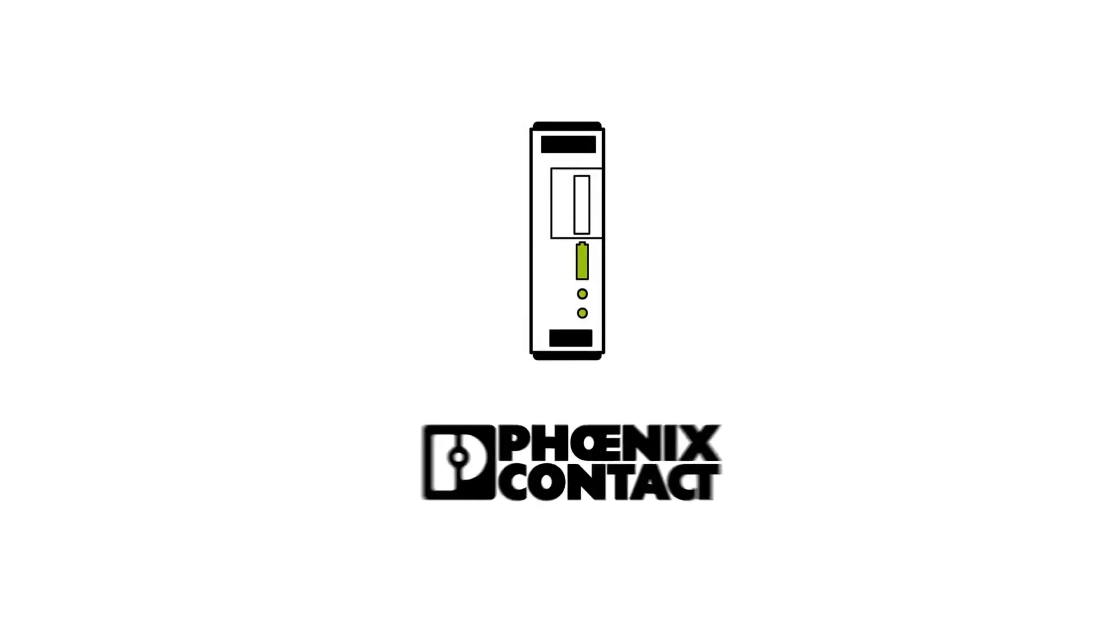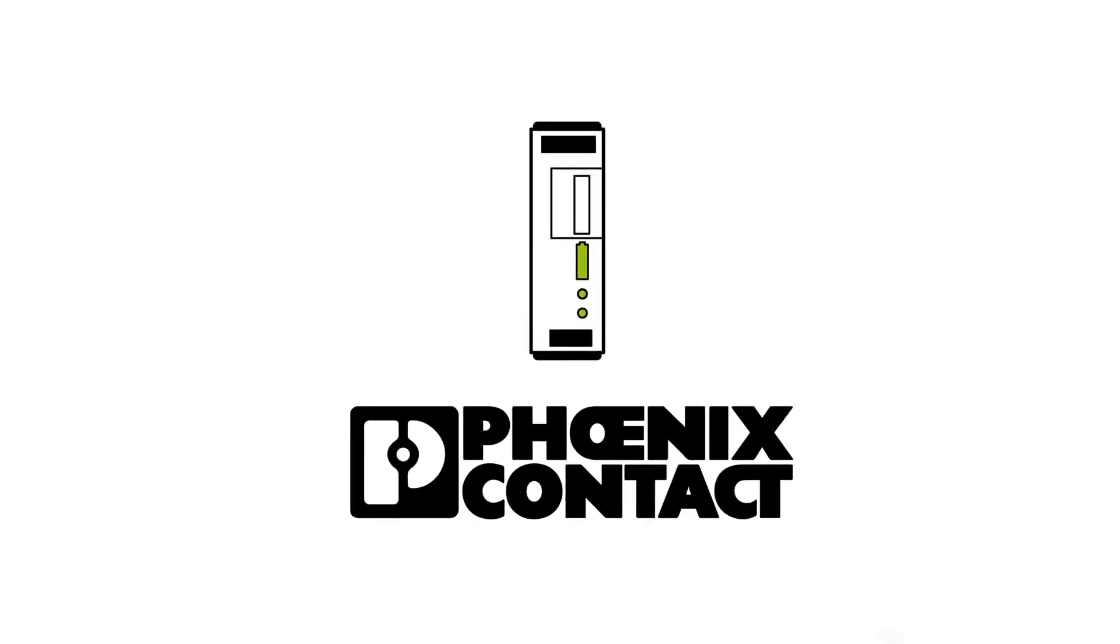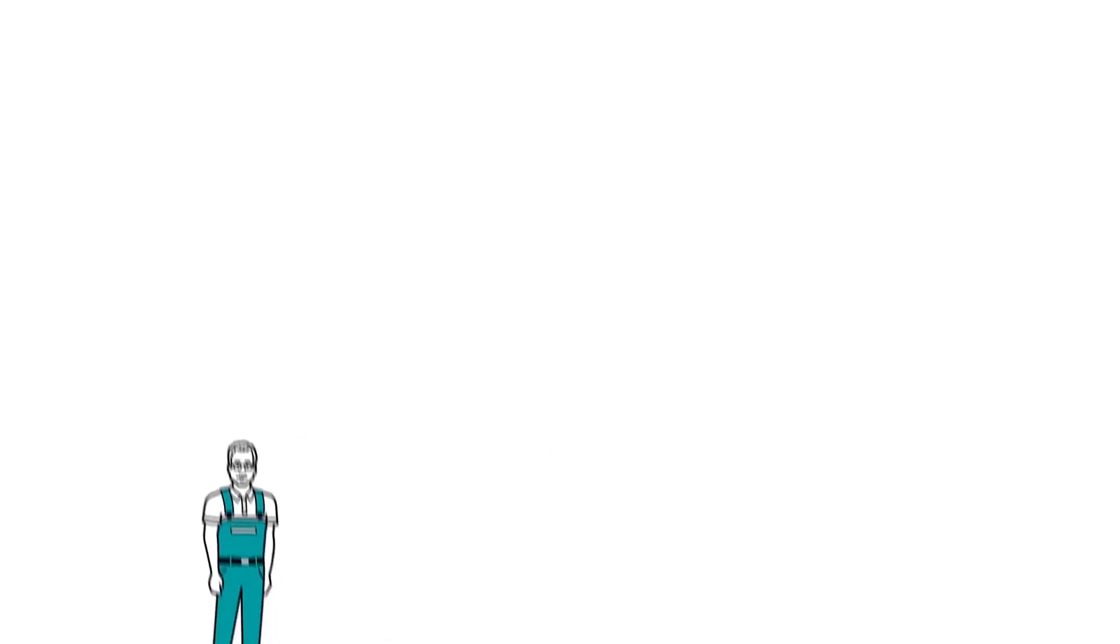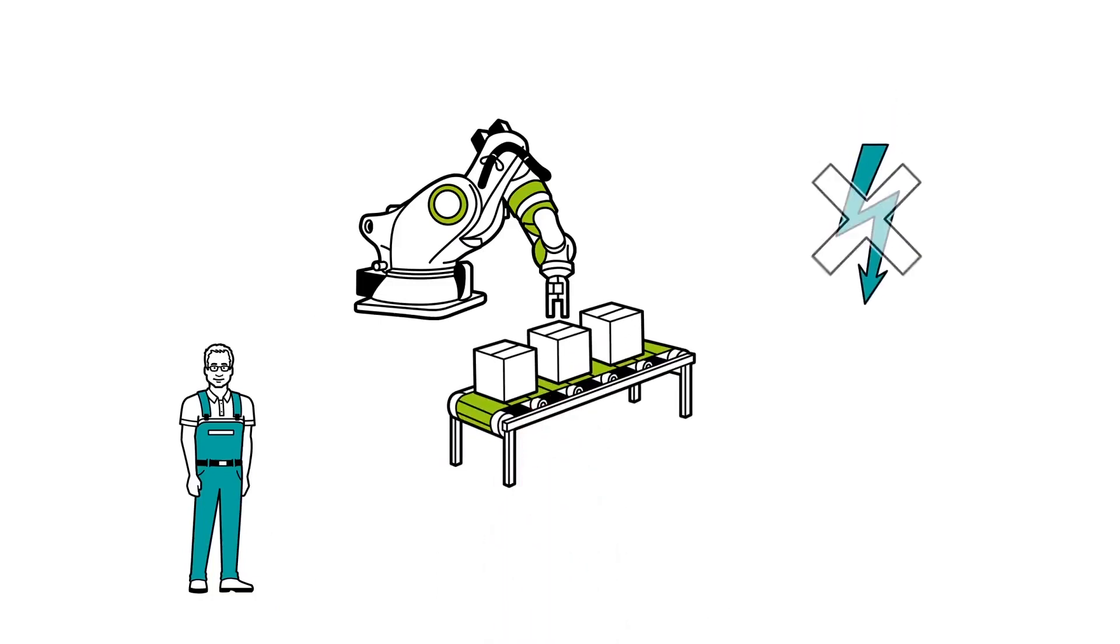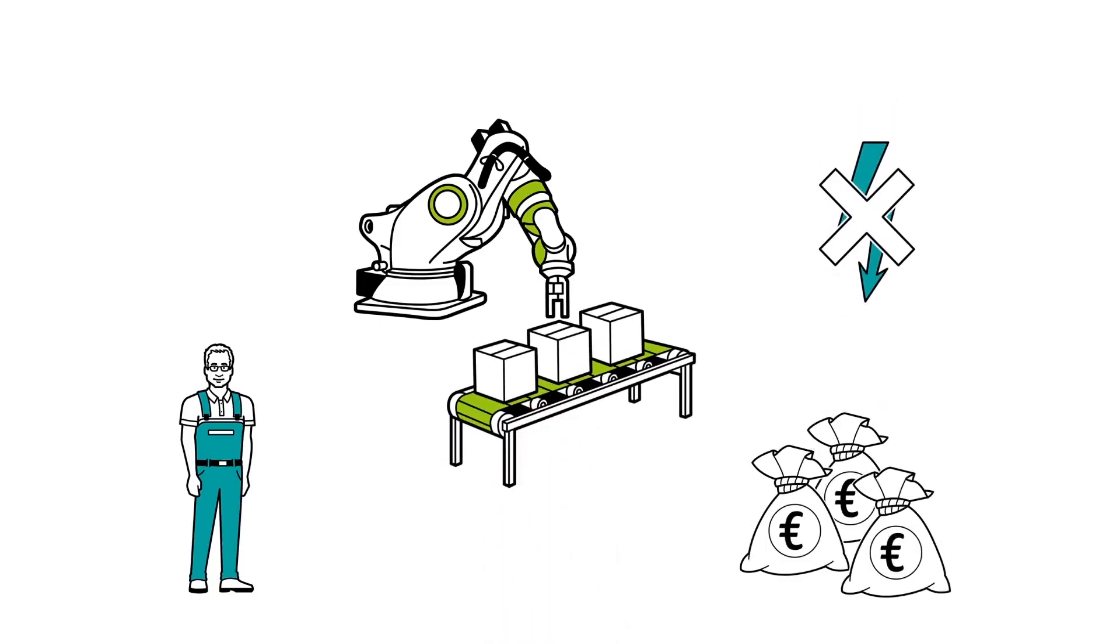The QUINT UPS from Phoenix Contact. Mr. Muller is a system operator responsible for the production robots in a factory. When there's a power failure in his system, this costs a lot of money because the entire production stops.